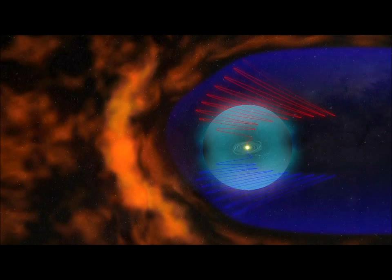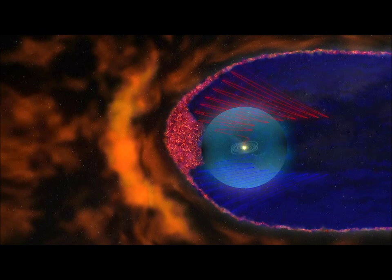This discovery has prompted a complete revision of what the heliosheath region looks like. The smooth, streamlined look is gone, replaced with a bubbly, frothy outer layer.